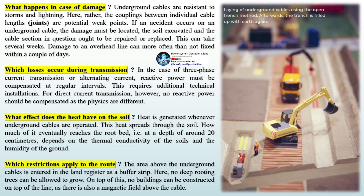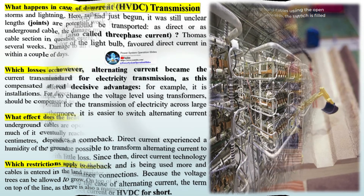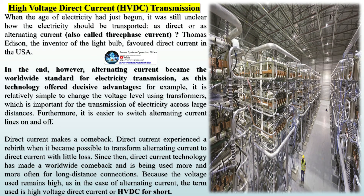For three-phase or alternating current transmission, reactive power must be compensated at regular intervals, requiring additional technical installations. For direct current transmission, no reactive power compensation is needed. When the age of electricity had just begun, it was unclear whether electricity should be transported as direct or alternating current, also called three-phase current. Thomas Edison, the inventor of the light bulb, favored direct current in the USA. In the end, alternating current became the worldwide standard for electricity transmission, as this technology offered decisive advantages — for example, it is relatively simple to change the voltage level using transformers, which is important for transmission of electricity across large distances.